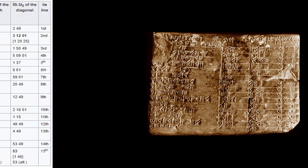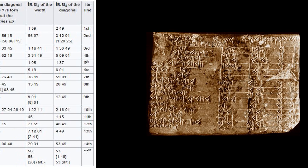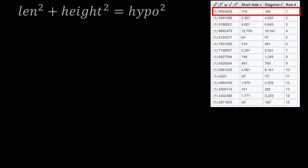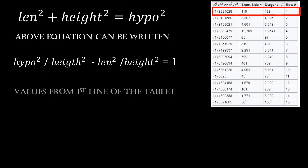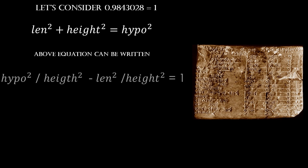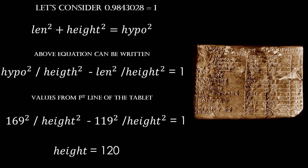The main content of the tablet is a table of numbers with four columns and 15 rows in Babylonian sexagesimal notation, or base 60. The fourth column is simply a row number from 1 to 15, and the second and third columns are completely visible in the surviving tablet. This tablet shows that ancient Mesopotamian people had knowledge of the Pythagorean theorem in a more general framework, but again there is no written statement of the theorem.